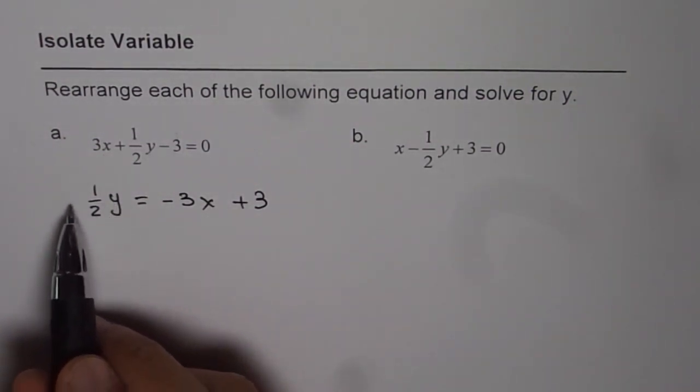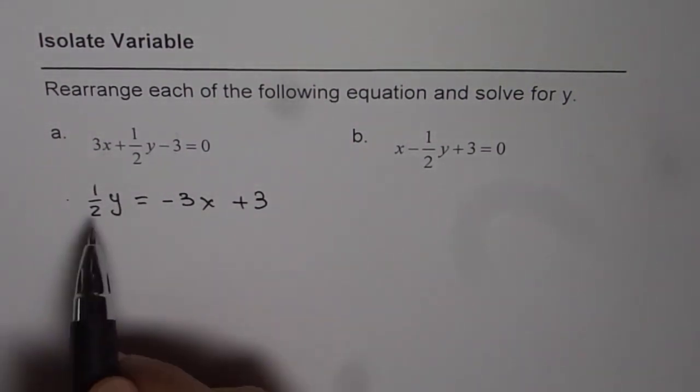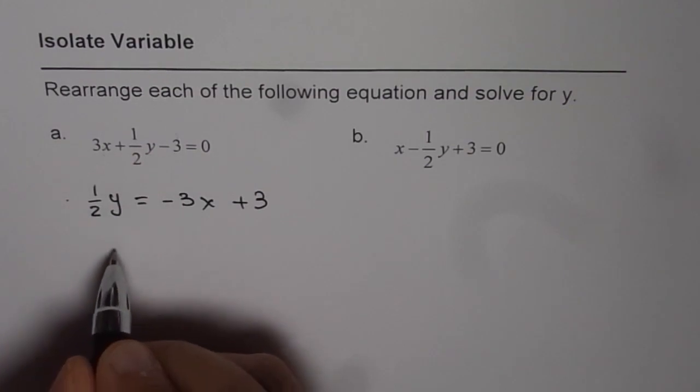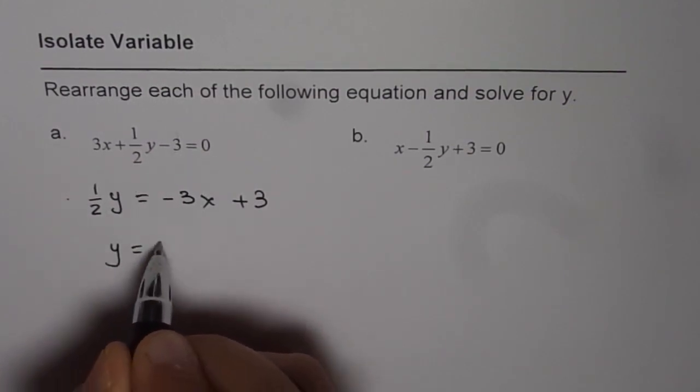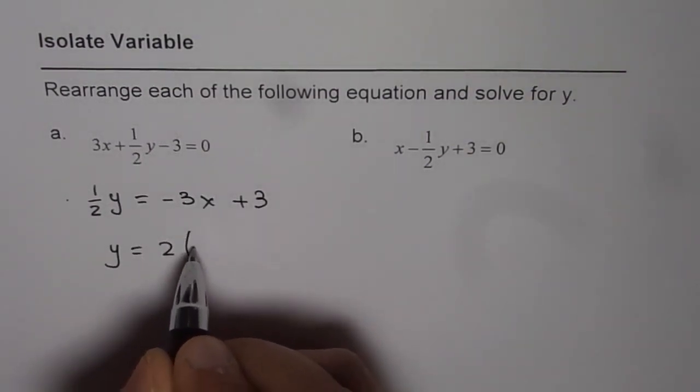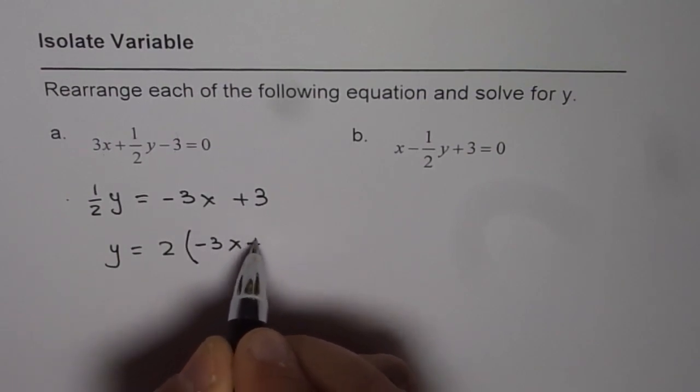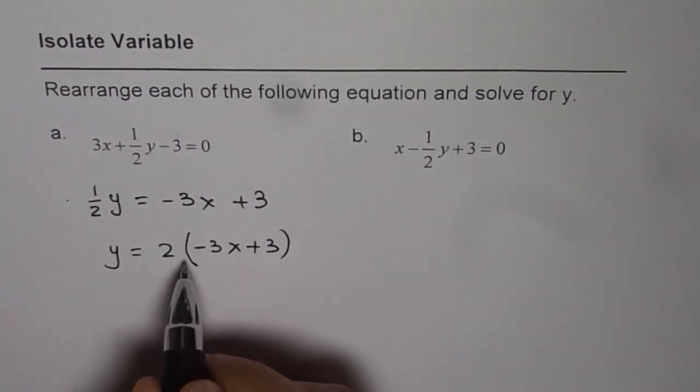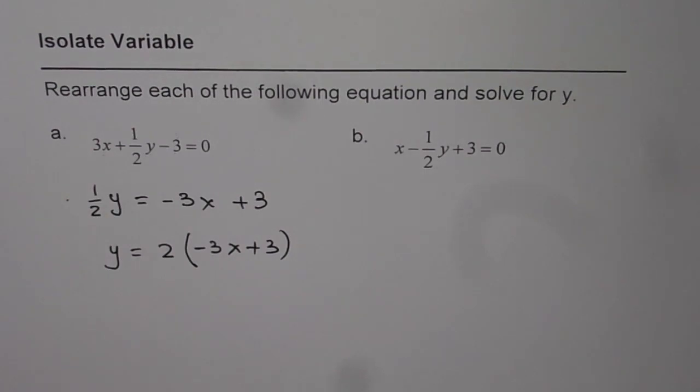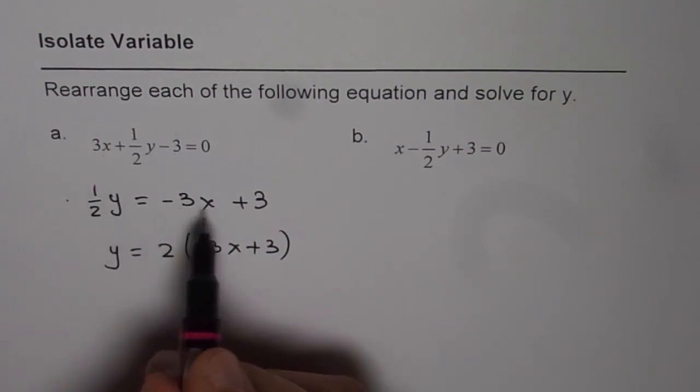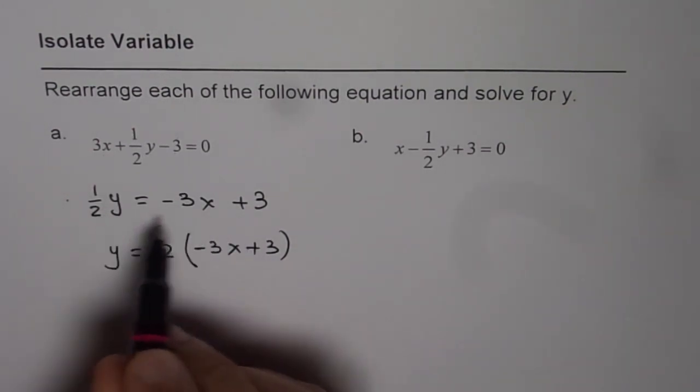To get y, let us multiply both sides by 2. So if you multiply both sides by 2, you get y equals to 2 times and within bracket minus 3x plus 3. It is very important to place the brackets. Since we are multiplying every term here by 2.